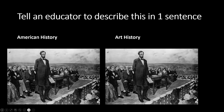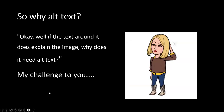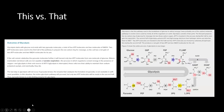With that in mind, we're going to acknowledge that alternative text is challenging. When I look at this image, I sort of have flashbacks to chemistry — at some point I did know what this means. It's difficult, and not to single out this particular subject matter, but I think STEM faculty have a little bit more of a challenging time with this. It's sometimes difficult to truly explain what this is. And so the question becomes: why do we need alt text? If there's text around an image, why do we need to provide a description of the image?